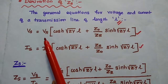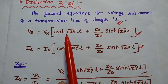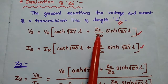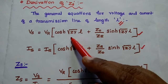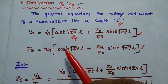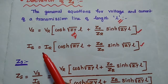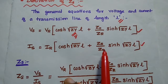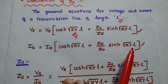Sending end voltage: Vs is equal to Vr into cosh(√zy · l) plus Z0 by Zr into sinh(√zy · l). In this, √zy is the gamma value. Sending end current: Is is equal to Ir into cosh(√zy · l) plus Zr by Z0 into sinh(√zy · l).